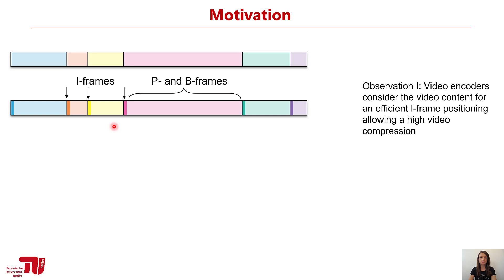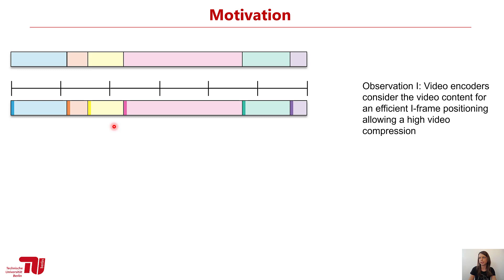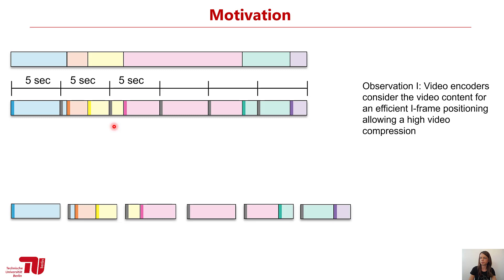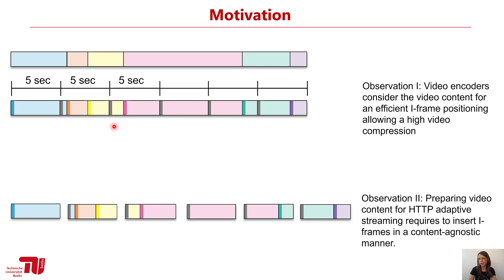The state-of-the-art mechanism applies segments of equal duration, typically something between 2 and 10 seconds. If we want segments of 5 seconds duration, for example, each segment has to start with an I-frame to make it playable independently. So we have to set an additional I-frame every 5 seconds and then split the video. This is done in a content-agnostic manner, and due to the additional I-frames needed, which are costly, we induce a higher encoding overhead.